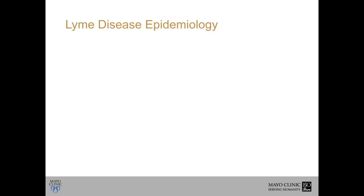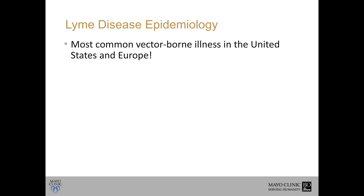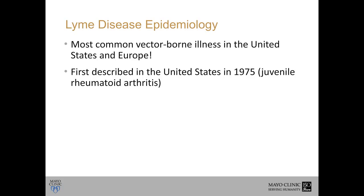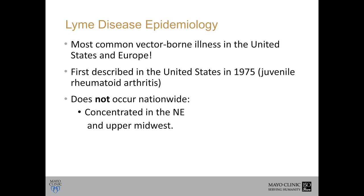Lyme disease is an important disease — it is the most common vector-borne illness in the United States and Europe. Anything transmitted by a vector, including insects such as mosquitoes and ticks, Lyme is the most common. It was first described in the United States in 1975, associated with what was thought at the time to be a cluster of juvenile rheumatoid arthritis cases, which turned out to be Lyme disease infection. Lyme does not occur nationwide — it's concentrated in the Northeast and upper Midwestern parts of the United States.